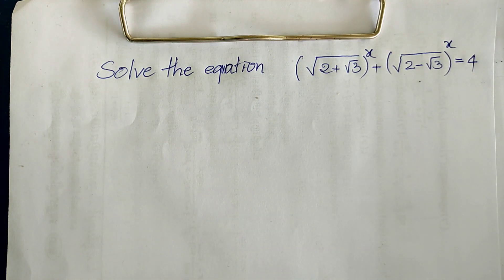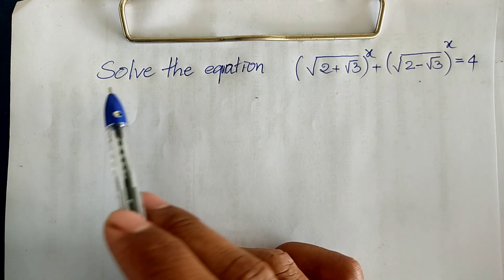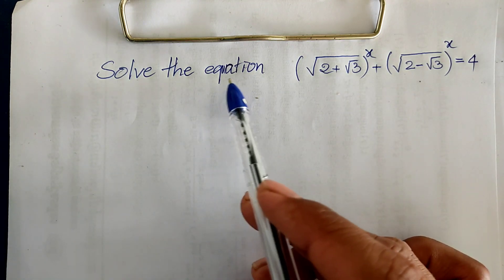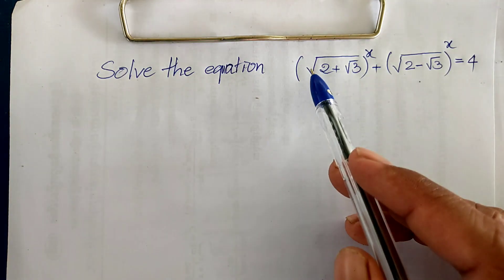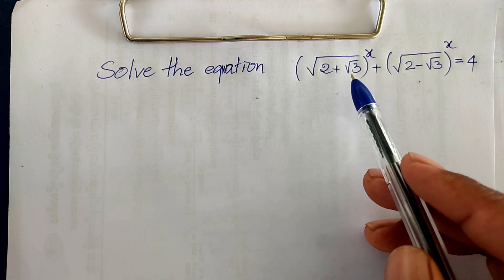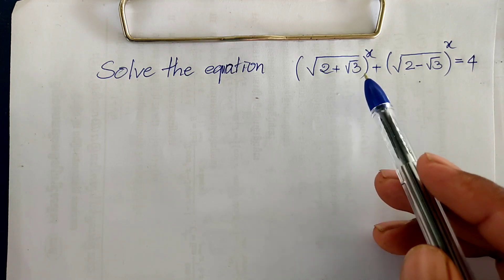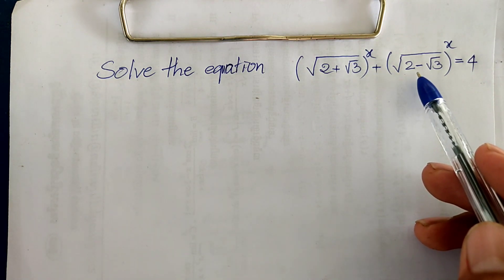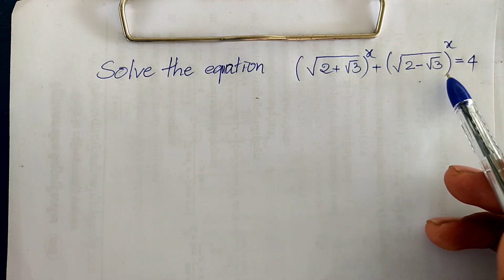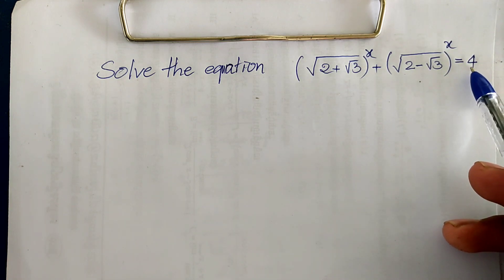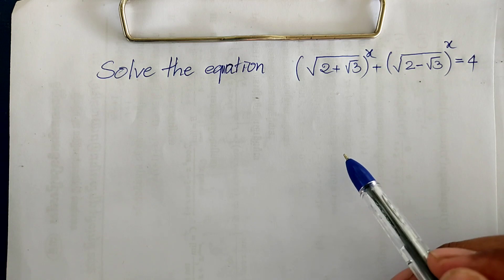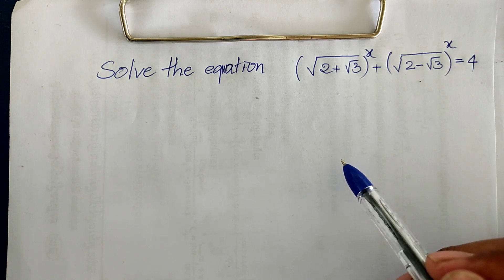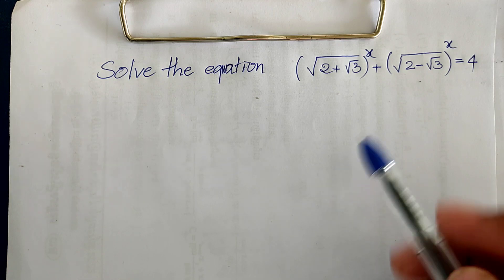Hello everyone, welcome to my YouTube channel. Today I have one exercise on paper. The equation we have is: square root of 2 plus square root of 3, all to the power 8, plus square root of 2 minus square root of 3, all to the power 8, is equal to 4. Before we go to the solution, please don't forget to subscribe to my channel for more exciting videos. Now let's go to the solution together.